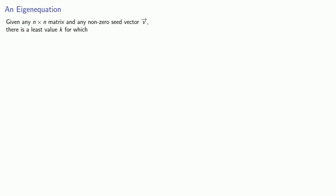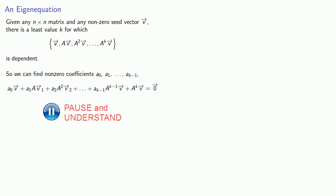Given an n by n matrix and any non-zero seed vector v, there's a least value k for which the set is dependent. So we can find non-zero coefficients a0, a1 through ak minus 1, which satisfy the vector equation. And there's a corresponding minimal polynomial.